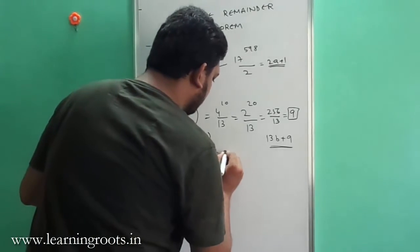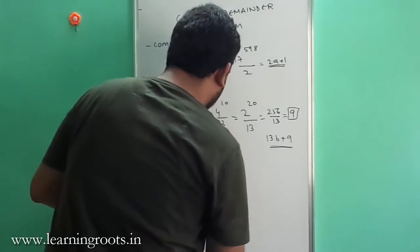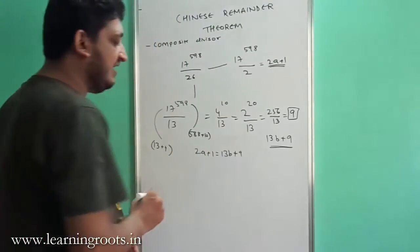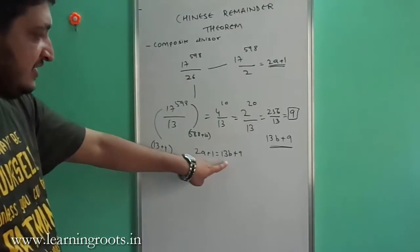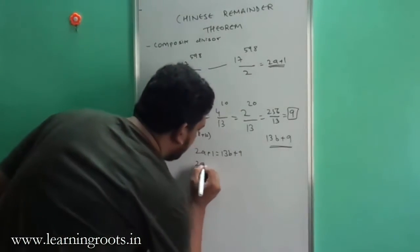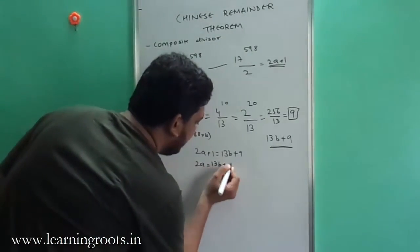The simplest thing remains that you have to equate 2A plus 1 equal to 13B plus 9. Now many a time people make a small mistake here. If 2A plus 1 equals 13B plus 9, which essentially means that 2A is equal to 13B plus 8.